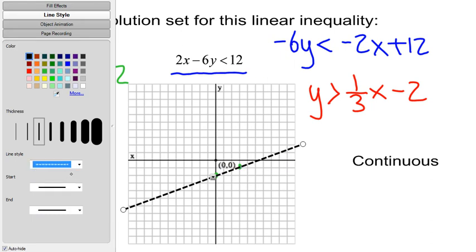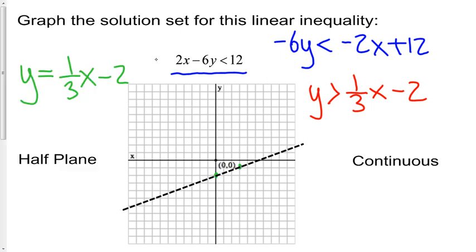So I'll just use my line style tool here to change that to a dashed boundary line which indicates that the points on this line are not a part of the solution set.